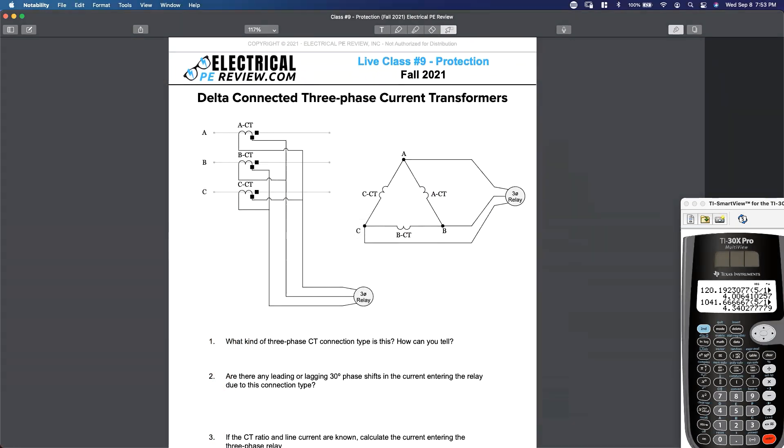All right, same exercise except delta-connected. Don't cheat. Stop looking at this. What kind of CT connection is this? Is this delta or wye? Don't cheat. Don't look at this either. It's delta. Yeah, how do we know? How do we know that this is a delta connection?